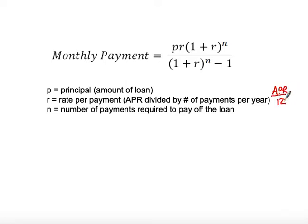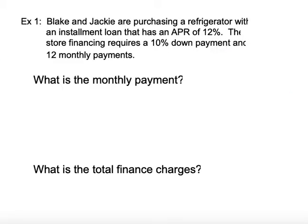N stands for the number of payments required to pay off the loan. The formula doesn't look very complicated, but once we start putting in the division and the exponents we'll need to be very careful about how we work through it. Let's try it with a problem.